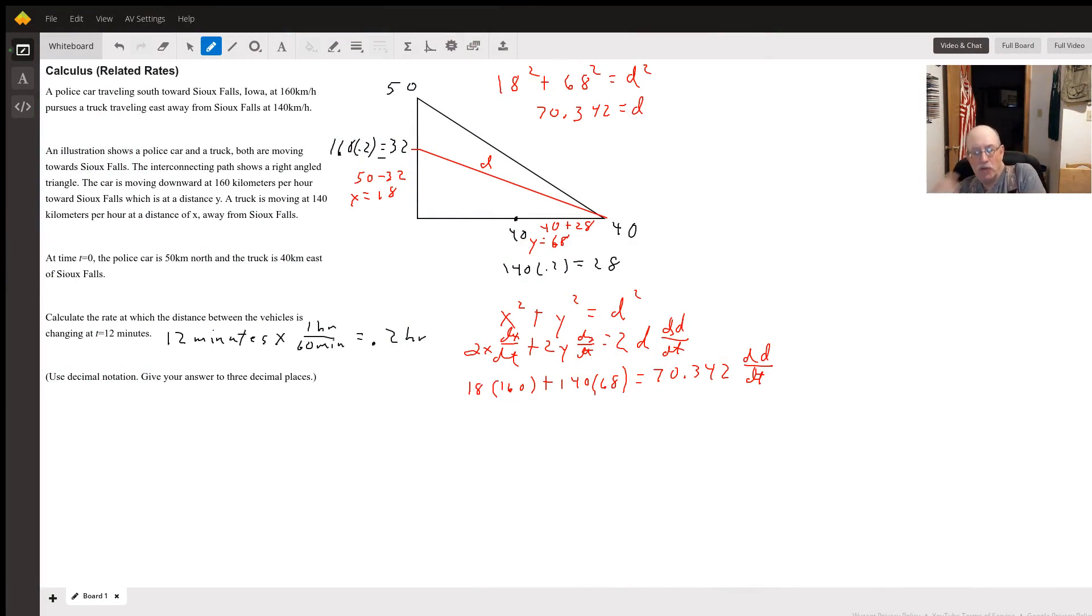Hello, so here's what we've got. The black triangle should look like this and this is our 40 here.